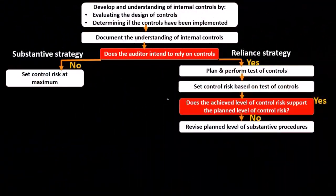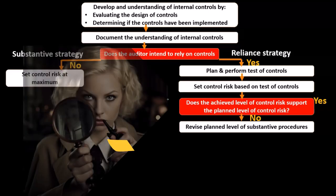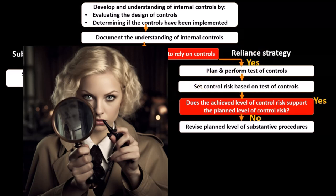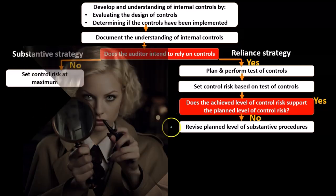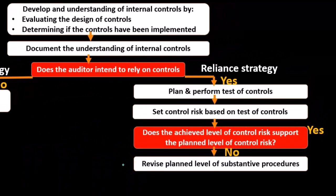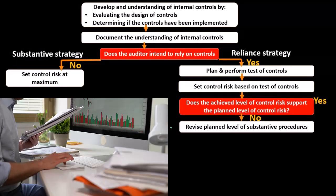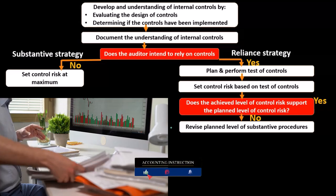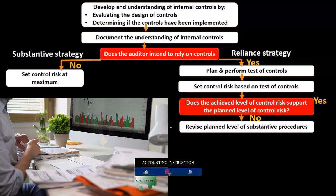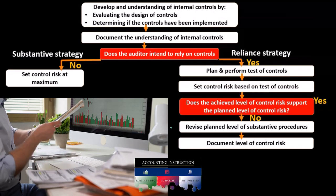If the answer is no, we revise the planned level of substantive testing. If the control risk differs from what we assessed in the planning stage, we account for that by revising the level of substantive testing — at the account, assertion, and transaction level — rather than at the internal control level.